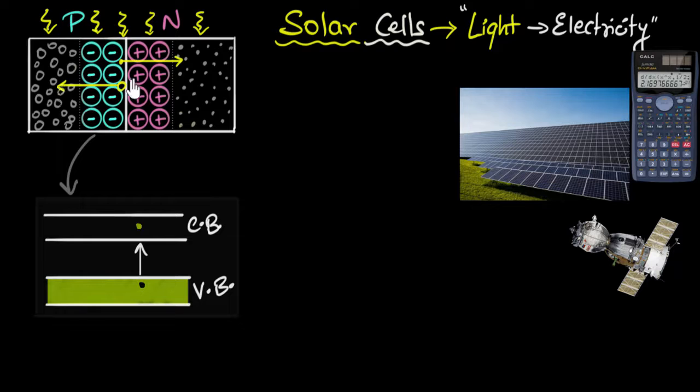So before they have a chance to recombine, they are swept across due to the field in the depletion region, this is the electric field generated in the depletion region. And as a result, when electron hole pairs are formed over here, the holes will get swept and they get accumulated in the P-type.